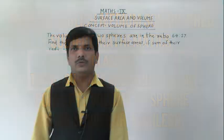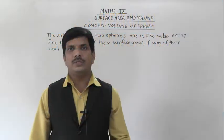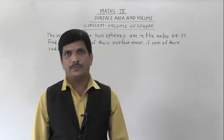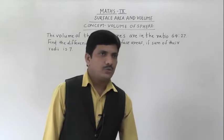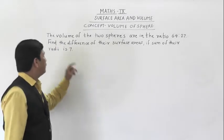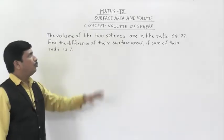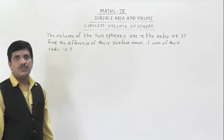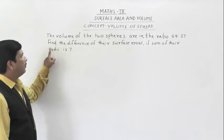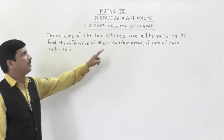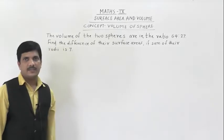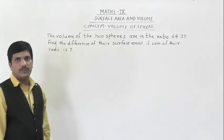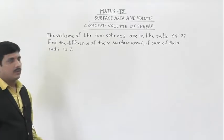Hello everybody, today we are going to see some examples which depend on the volume of a sphere. The first example: the volumes of two spheres are in the ratio 64 is to 27. Find the difference of their surface areas if the sum of their radii is 7.